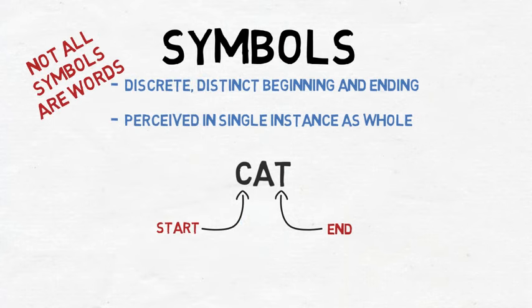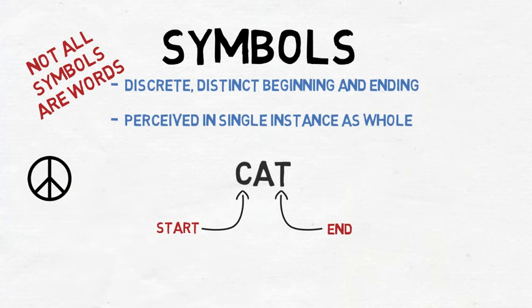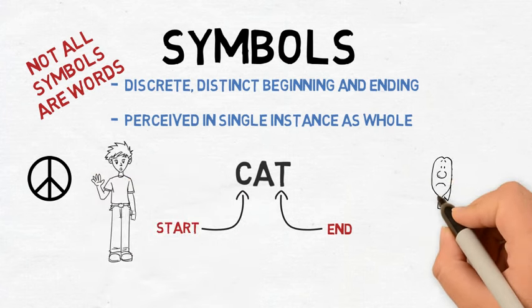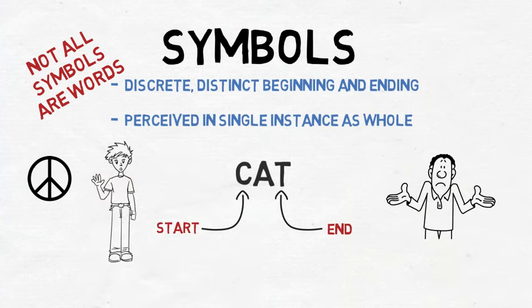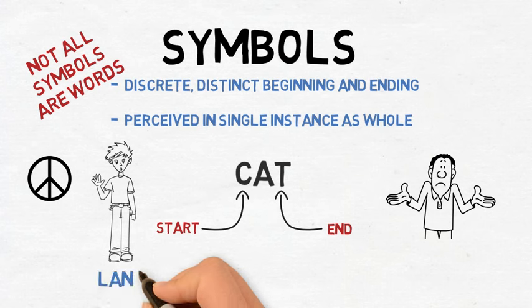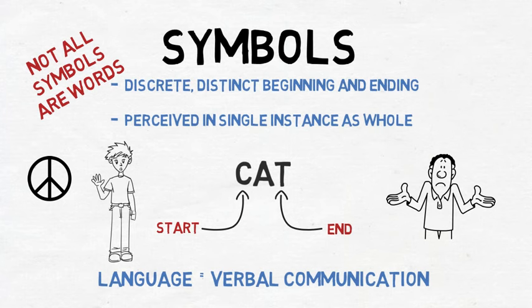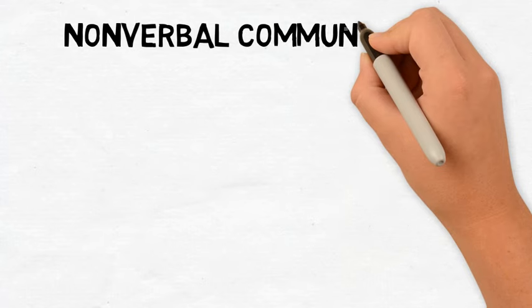Specific movements, gestures, images, and non-word sounds can be classified as symbols as well, if they communicate a discrete thought or idea like a word does. For instance, the peace sign, holding up a hand palm forward to communicate stop, and shrugging one's shoulders to communicate 'I don't know.' Communication that uses language is classified as verbal communication. Everything else that is communicated, beyond the words in a language, is classified as non-verbal communication.